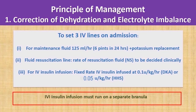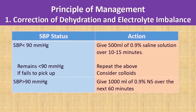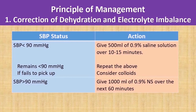In certain subjects with poor vascular access, one thing that cannot be compromised is that the IV insulin infusion must always run on a separate cannula. From this table, if a subject presents with hypovolemic shock, run the first pint of normal saline over 10 to 15 minutes and keep in view to repeat the second bolus if blood pressure doesn't improve. In normotensive patients, the first litre of normal saline is given over one hour.